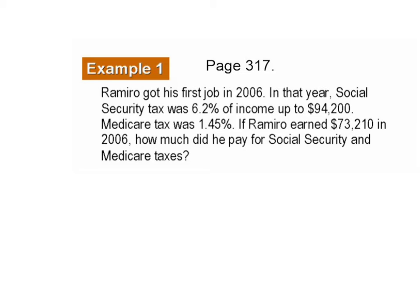It says: Romero got his first job in 2006, and in that year, Social Security taxes were 6.2% of income, up to $94,200. Medicare tax was 1.45%. If Romero earned $73,210 in 2006, how much did he pay for Social Security and Medicare taxes? To determine that, all we need to do is turn our percentages into decimals and multiply by his income. Romero did not go over the maximum for Social Security. So we have $73,210 times 6.2%, or 0.062. You plug that into your calculator and you get $4,539.02.